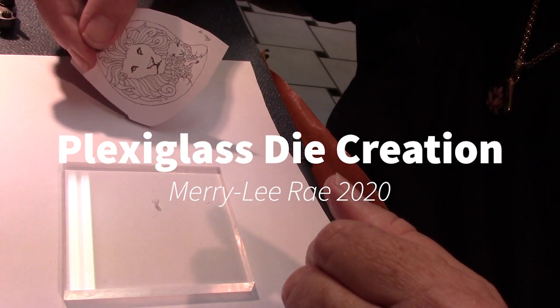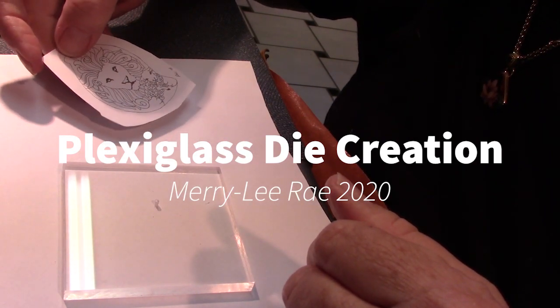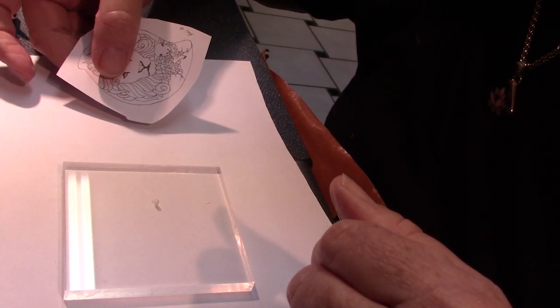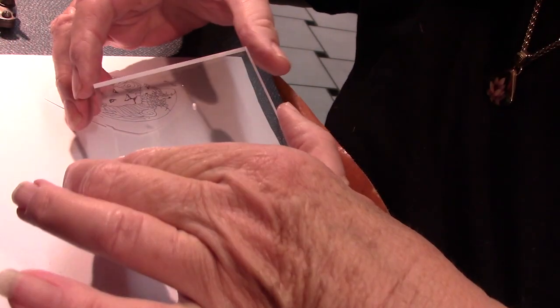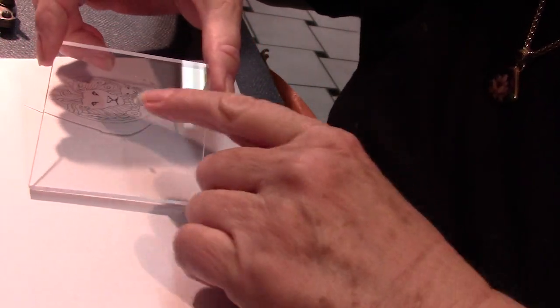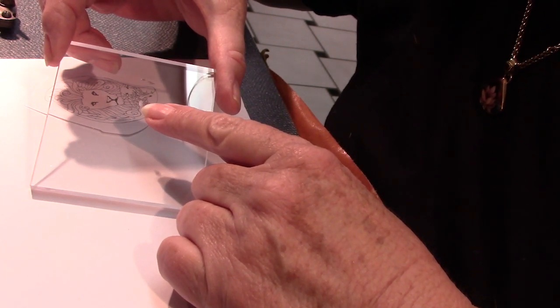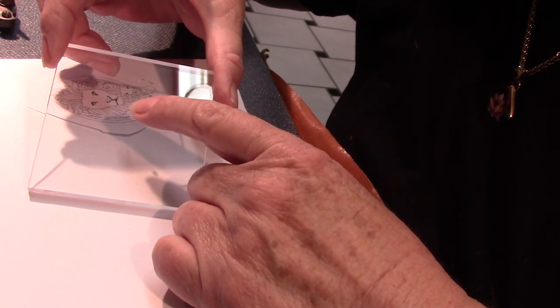So I have here my design with the outside edge drawn on that design, and I have here a piece of quarter inch thick plexiglass that I've drilled a hole through already to thread the saw blade through.